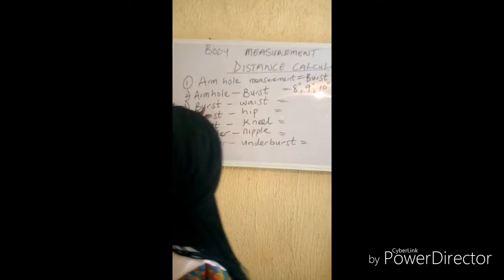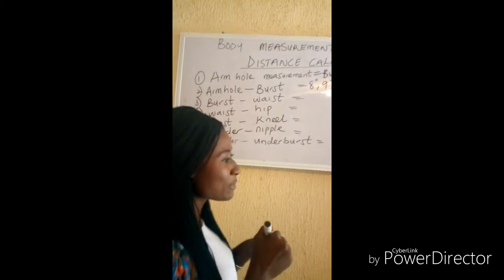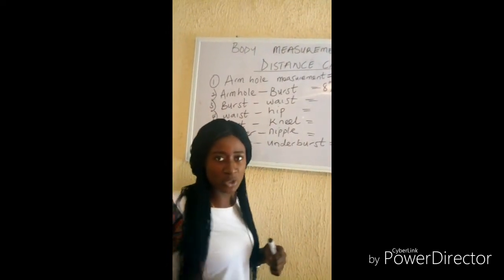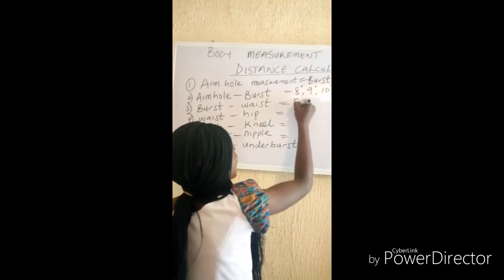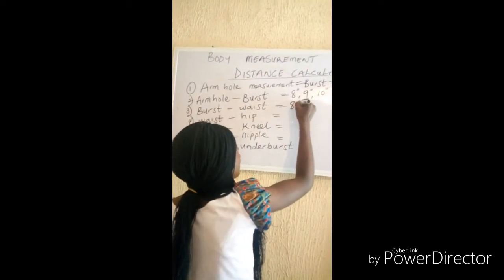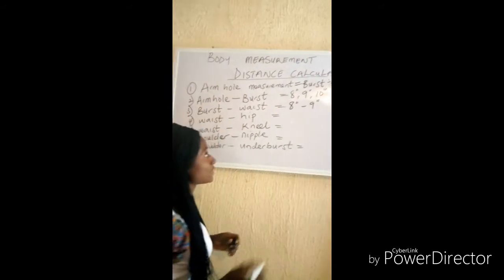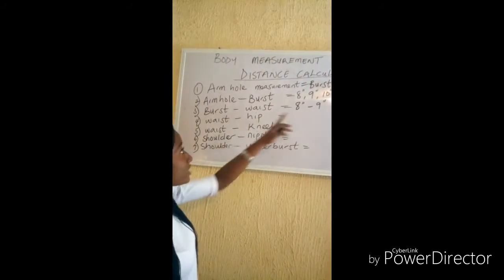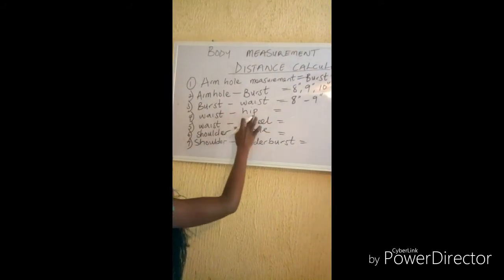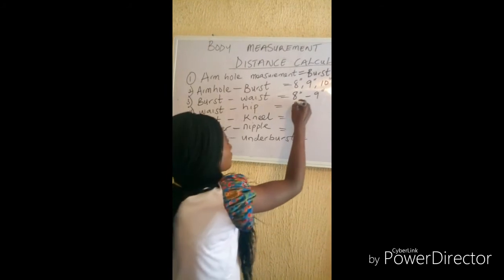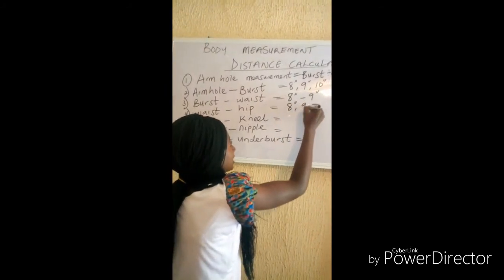From the bust to the waist, the distance varies from 8 inches to 9 inches. From the waist to the hip, it also varies from 8 inches to 9 inches.